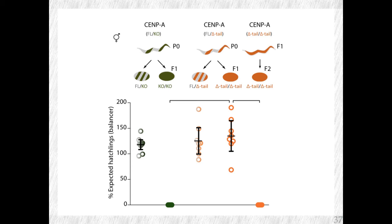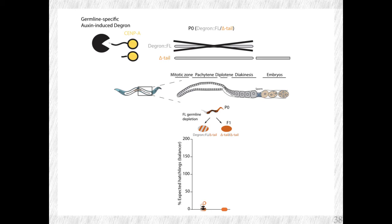To address this very specifically, we used a technique known as an auxin-induced degron, where we took one of these heterozygous worms — having both the full-length and the tail-less copy — and specifically removed the full-length copy in the germline of these worms, leaving them with only the tail-less copy in the germline. We were then wondering what would happen to the progeny. The answer is quite clear: the progeny of this worm that only had the tail-less copy in the germline is dead. It seems that having the full-length copy in the maternal germline of Sempe is essential for the viability of the next generation.